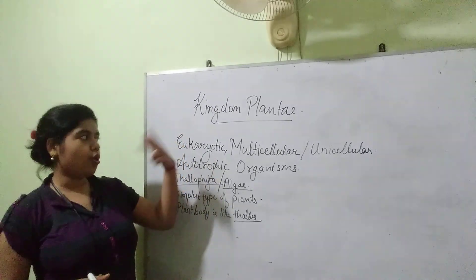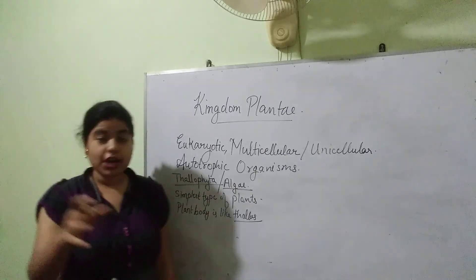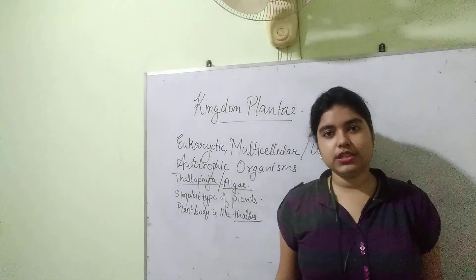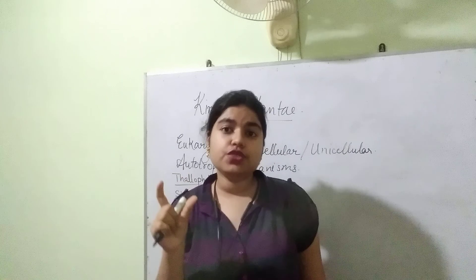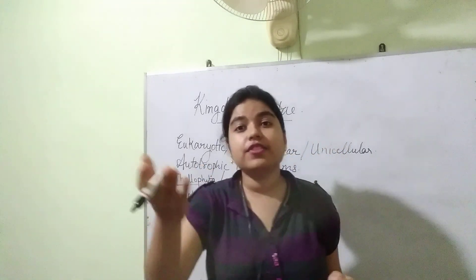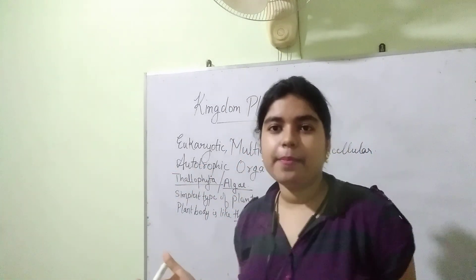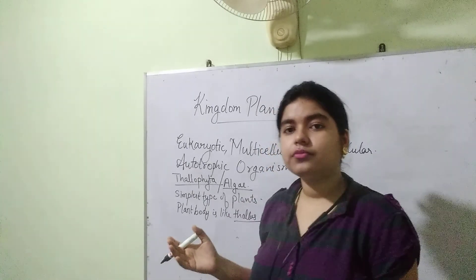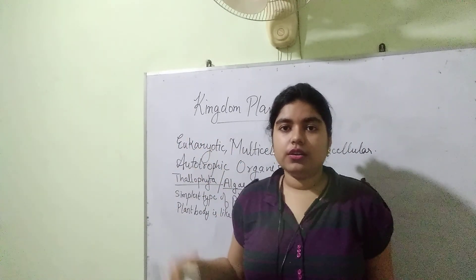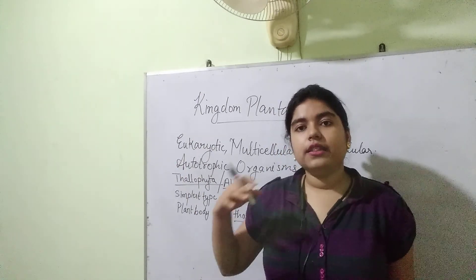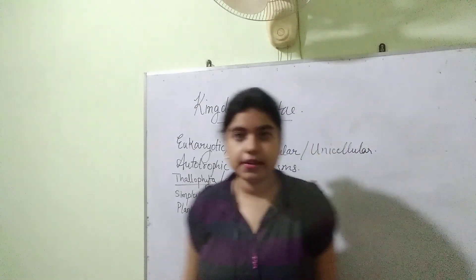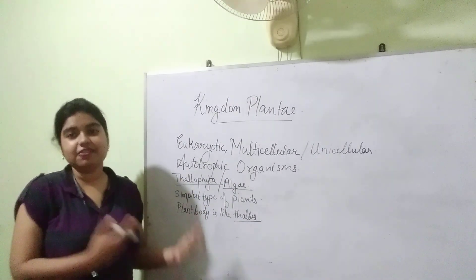Thallophytes are photosynthetic because all plants are autotrophic. There are certain plants which are insectivorous, but their primary mode of nutrition is also photosynthesis — they depend on animals only for certain nutrients like nitrogen. Insectivorous plants include Venus flytrap and bladderwort. Then there are certain parasitic plants like Cuscuta. But most plants are autotrophic, and photosynthesis defines what a plant is.